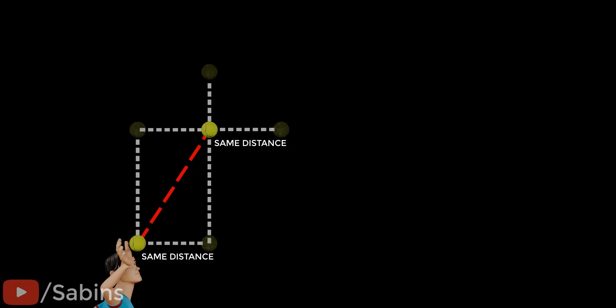However, the vertical component of velocity has been reduced due to the effect of gravity. Thus, the distance traveled vertically in this time interval will be lesser. Just continue this logic for a few more intervals. You can clearly see the object is taking a curved path.